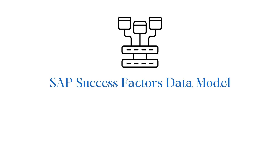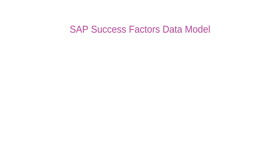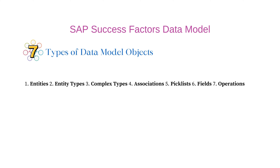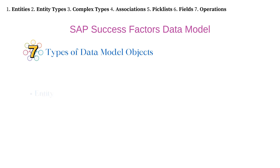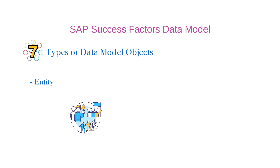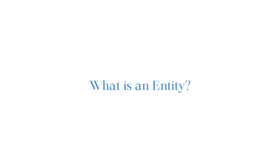To work with SAP SuccessFactors API, you need to have a basic understanding of the SAP SuccessFactors data model. In this chapter, I am going to cover the SAP SuccessFactors data model in detail. In the SAP SuccessFactors data model, we mainly have seven different types of data model objects. The first one is Entity, which is the main building block of the SAP SuccessFactors data model.